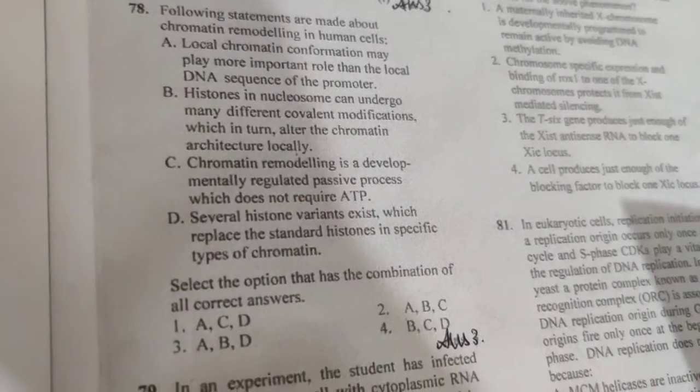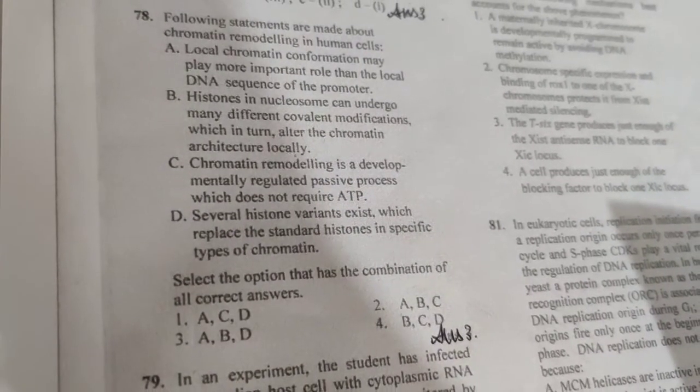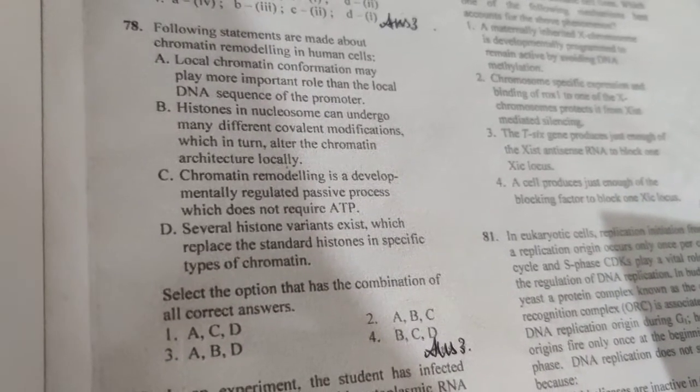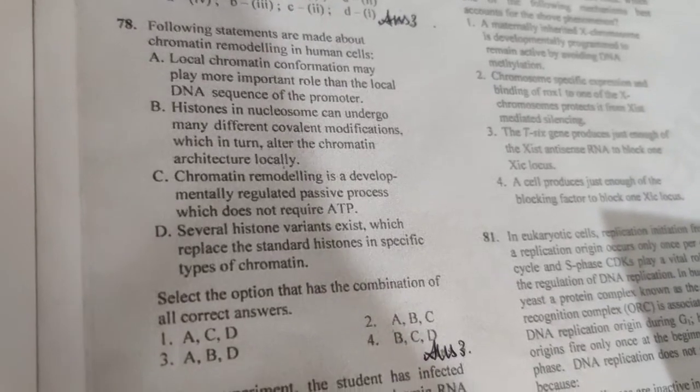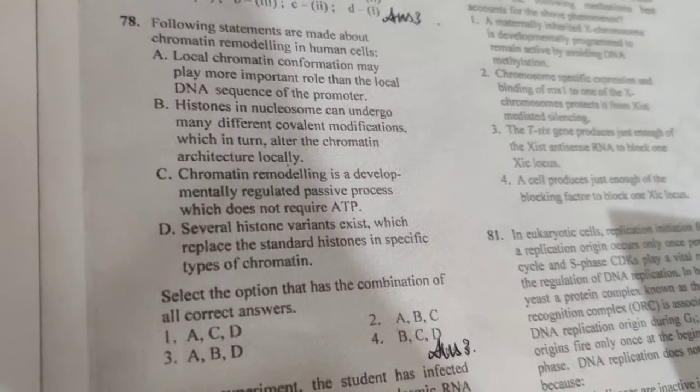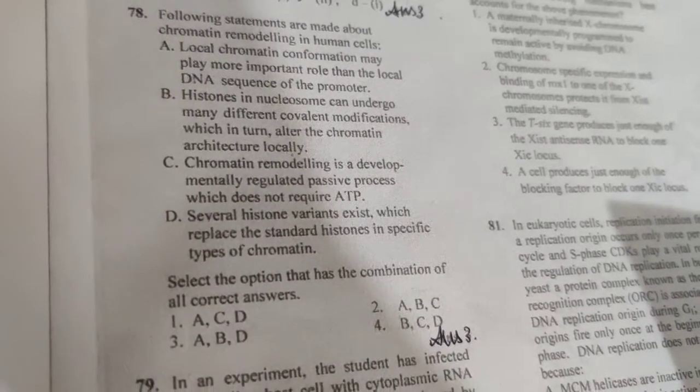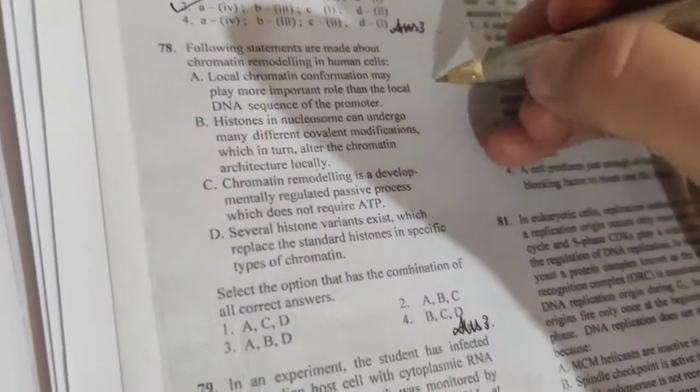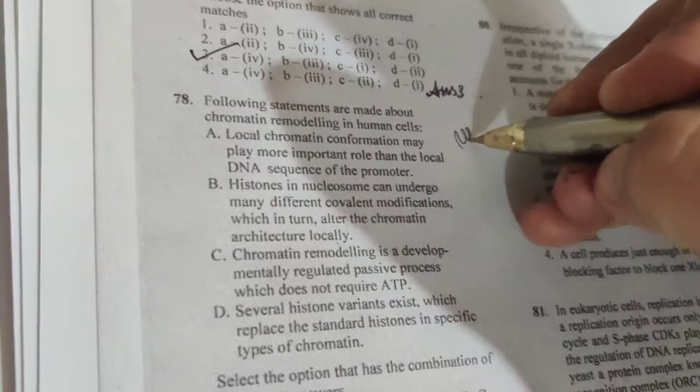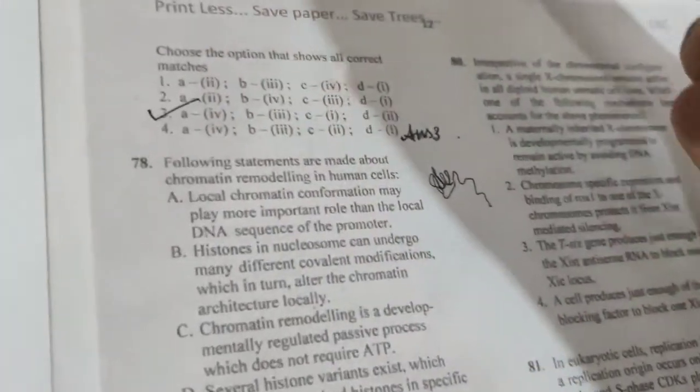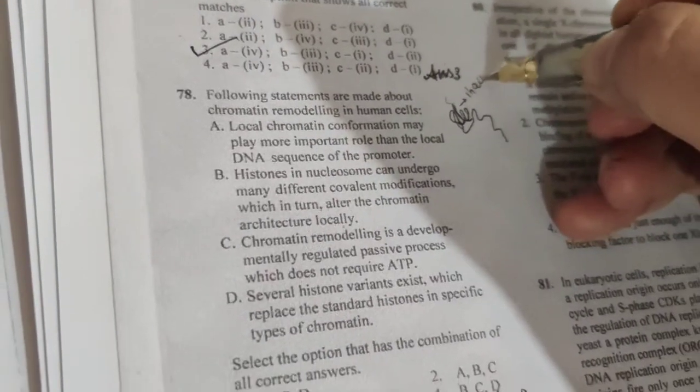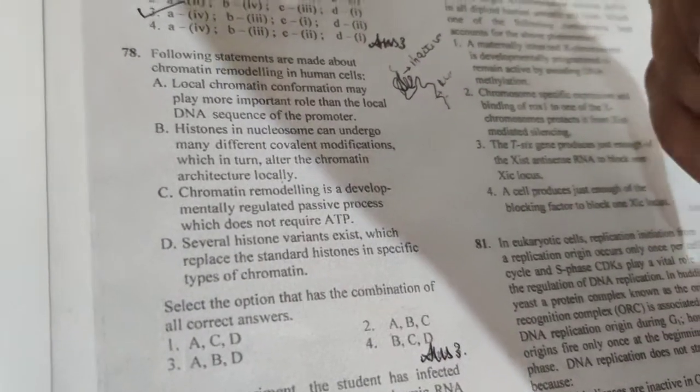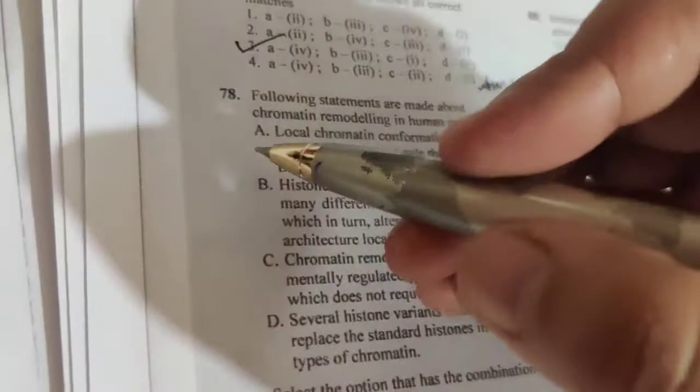Moving on to question number 78. Following statements are made about chromatin remodeling in human cells. So basically, we will find out which statement is wrong. We will mark the correct answer. Local chromatin conformation may play an important role in the local DNA sequence of the promoter. See, local conformation is very important because if our DNA is coiled form, folded or relaxed, it depends on that. If it is coiled, it is inactive. If it is relaxed, it is active form like heterochromatin. So, it depends on that. So this statement is okay.